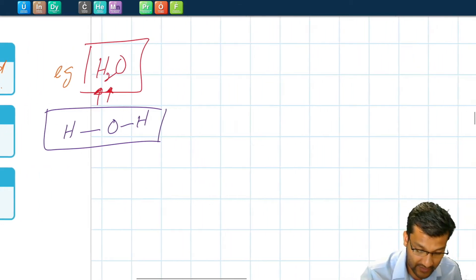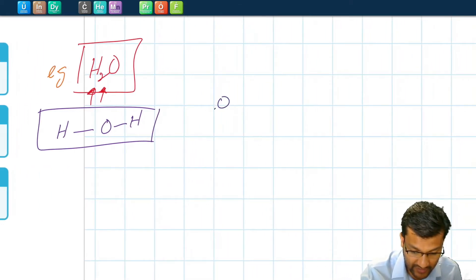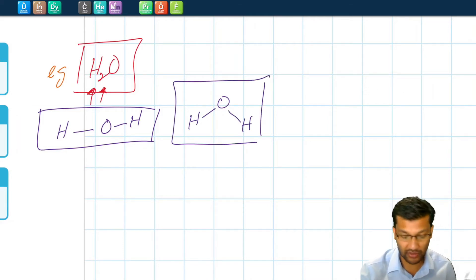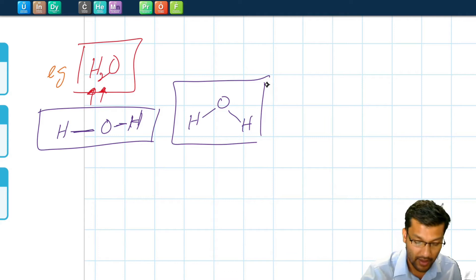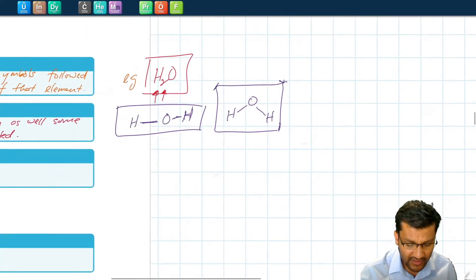Sometimes you might even see it written in like a V form like this, which also gives us some structural information. It tells us that these atoms are not in a straight line but they rather form an angle, which is how you might see a lot of this. So that's the structural formula.